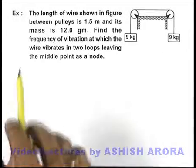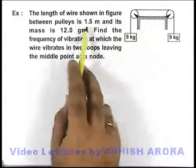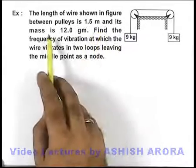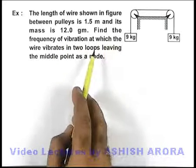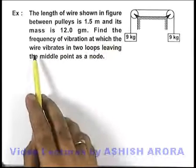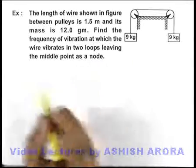In this example, we are given that the length of the wire shown in figure between pulleys is 1.5 meters and its mass is 12 grams. We are asked to find the frequency of vibrations at which the wire vibrates in two loops, leaving the middle point as a node.